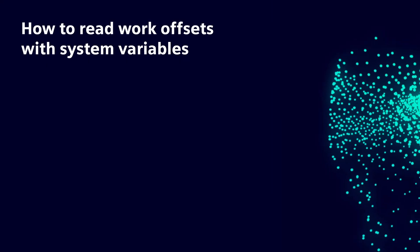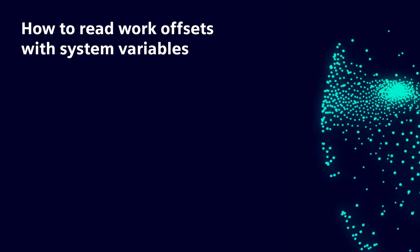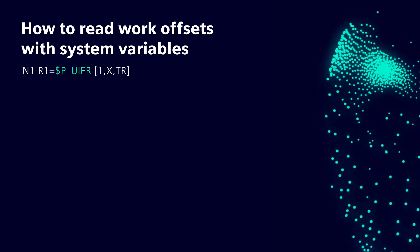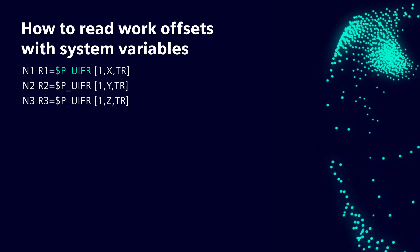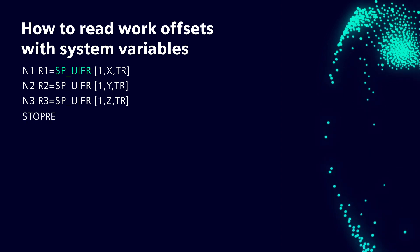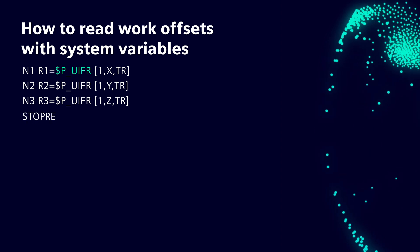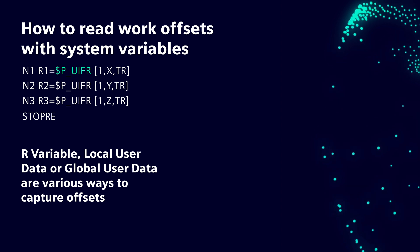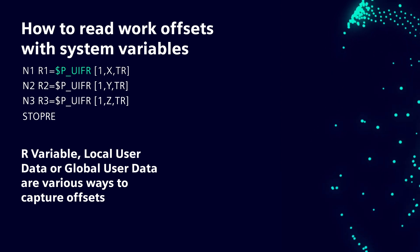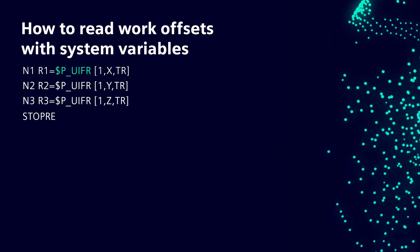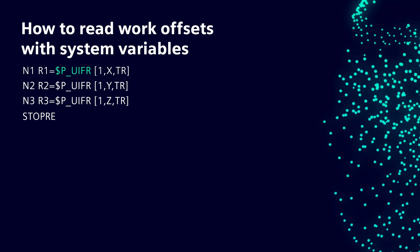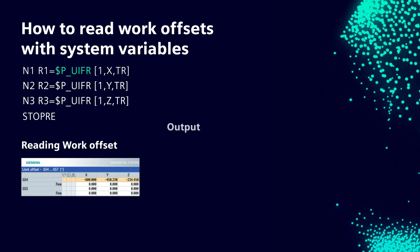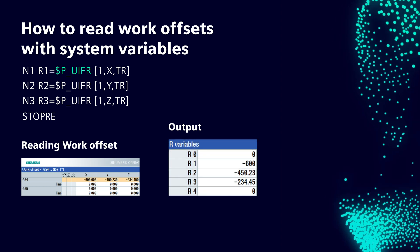We are going to see how to read a work offset using a system variable. The $P_UIFR command is used to read work offsets along with variables like R variable, local user data, or global user data. Let us consider some values stored in the work offset in G54 and see how to read them out with R variables.